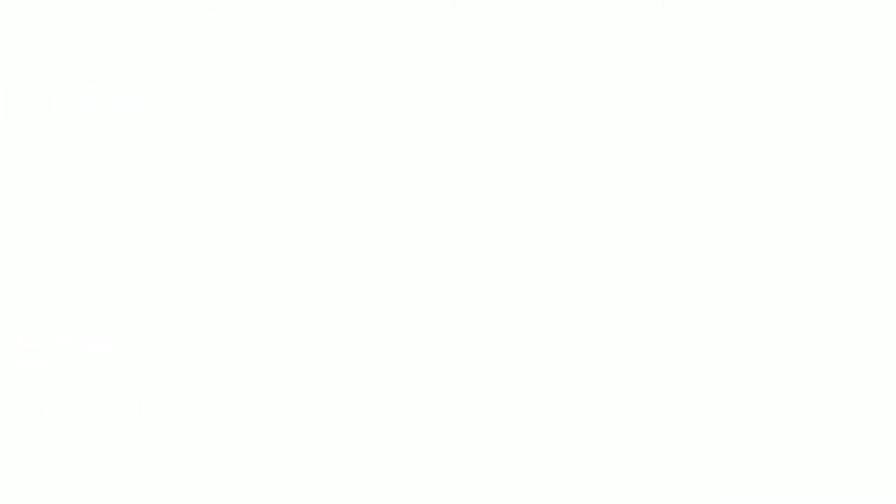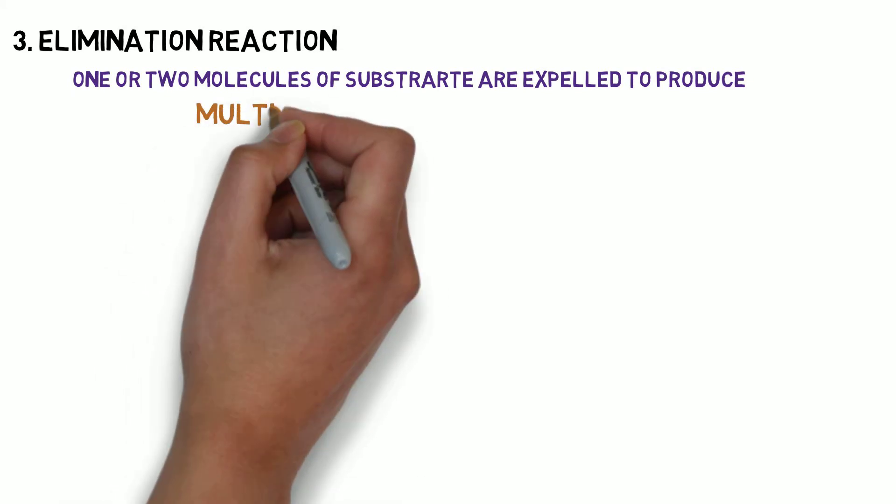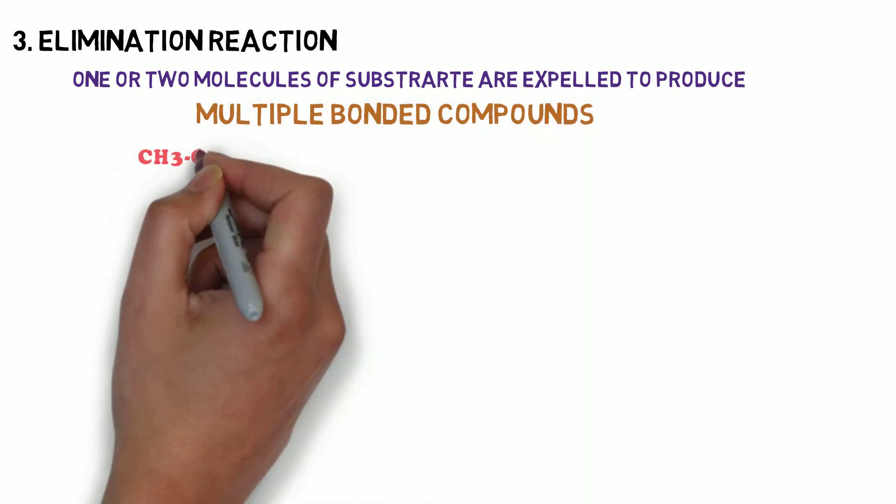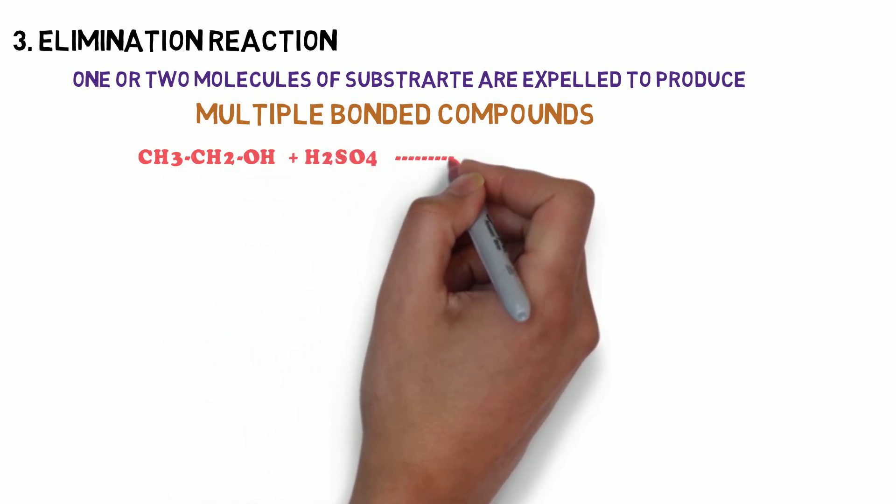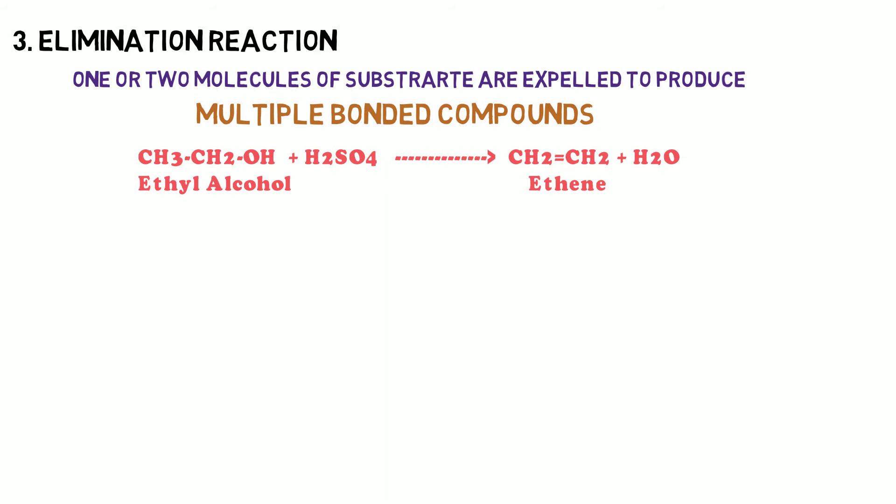Then elimination reaction. One or two molecules of the substrate are expelled to produce multiple bonded compounds. In this, the ethyl alcohol when treated with sulfuric acid, it gives double bonded compound, ethene and water.